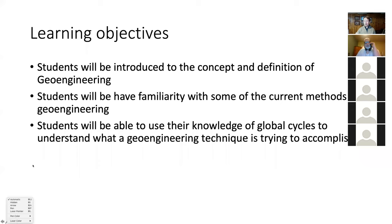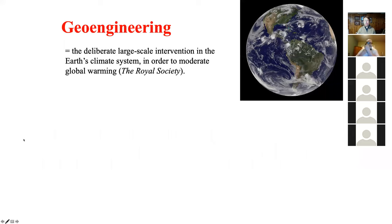Any other guesses? Okay, so we're going to accomplish my first learning objective right now. Geoengineering is the deliberate large-scale intervention in the Earth's climate system in order to moderate global warming. The main thing here is that this is trying to engineer the entire globe and its global systems.